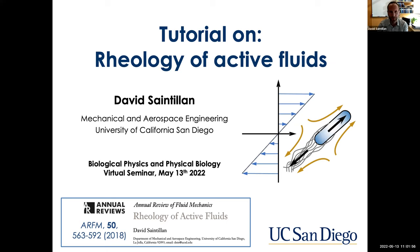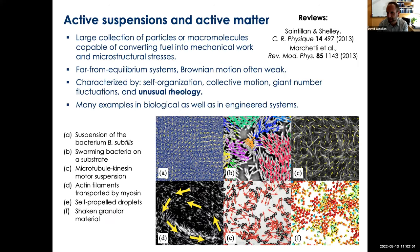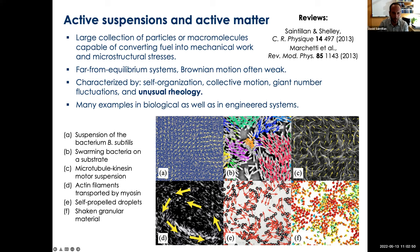So we're talking about active fluids. This audience is probably familiar with active matter, but just to remind you: we're thinking about collections of particles or macromolecules that are able to draw energy from a source of fuel — either internal or from their environment — and convert this into mechanical work. There are many examples in biology as well as in engineering. The example I'm mostly going to think about in this tutorial is a suspension of swimming particles, such as bacteria. These systems tend to self-organize, display collective motion and strong fluctuations, but the feature I'll focus on is their rheology — which is very unusual compared to passive soft matter systems.